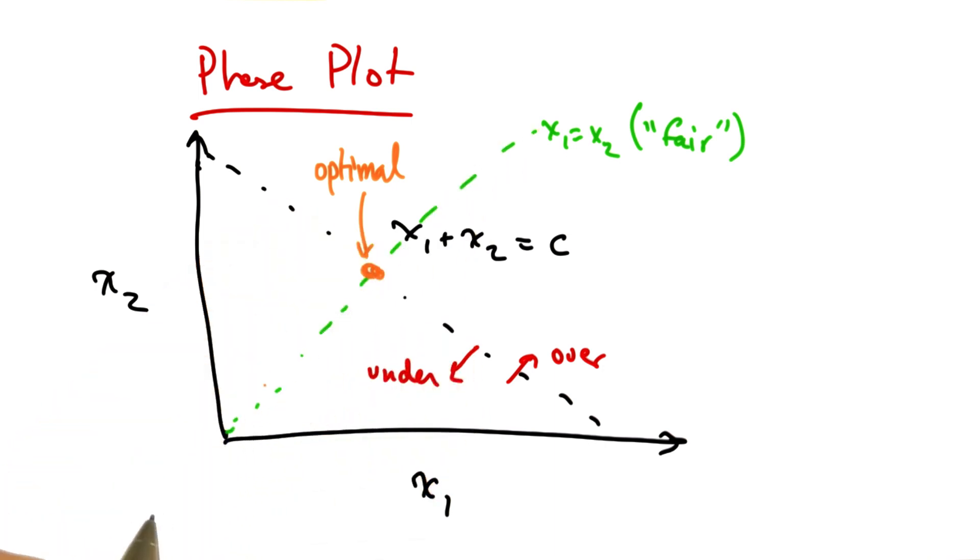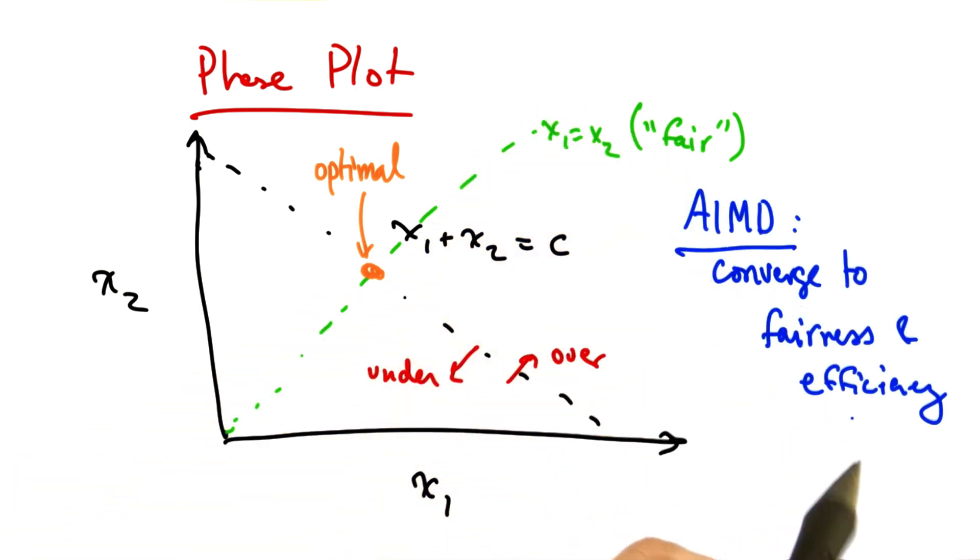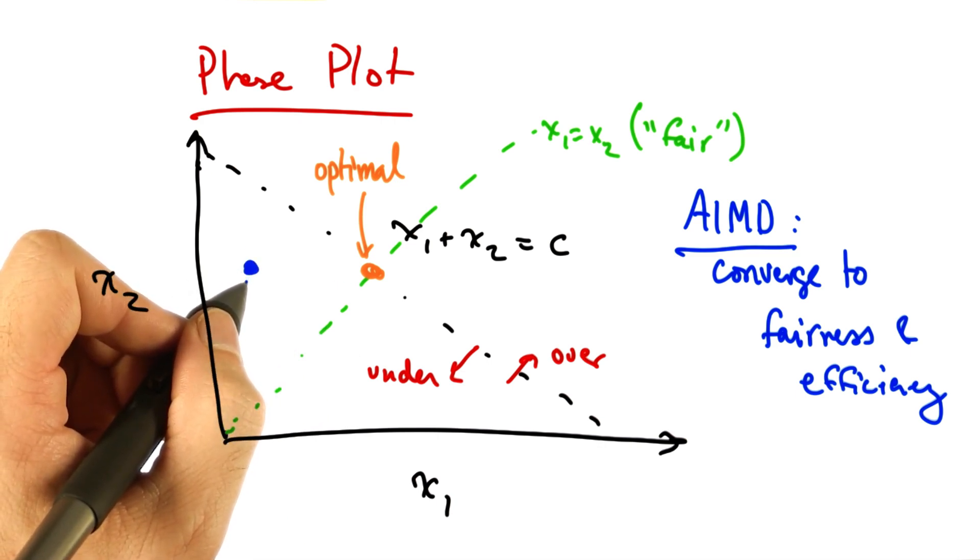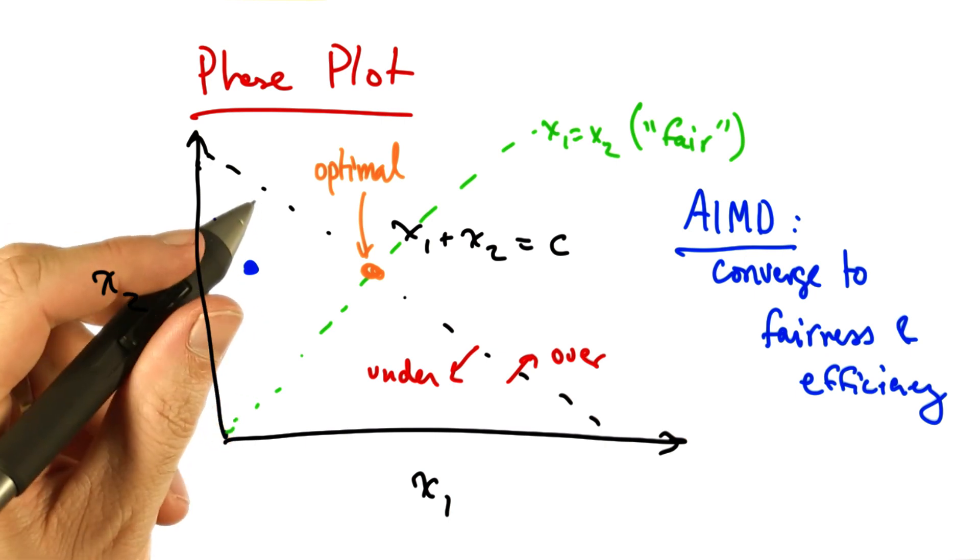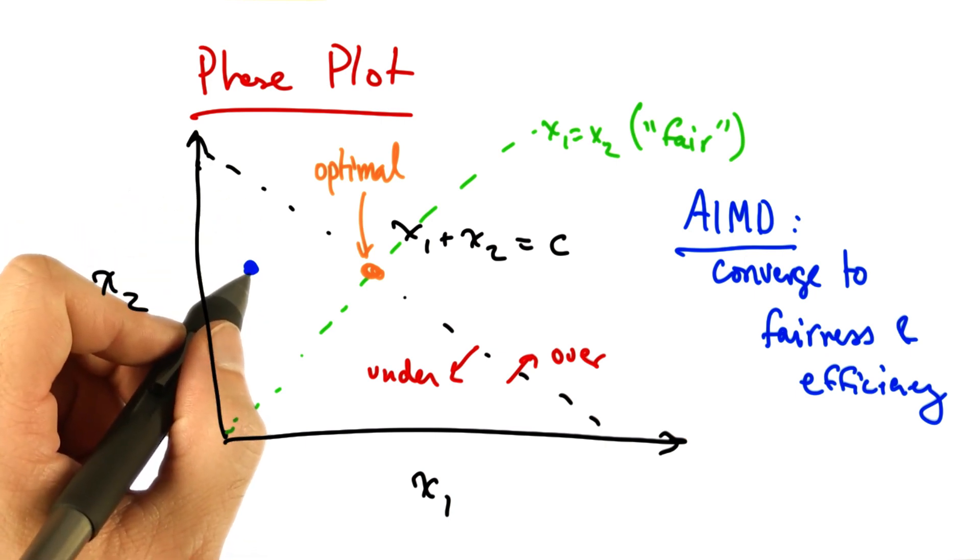We can use the phase plot to understand why senders who use additive increase, multiplicative decrease converge to fairness. The senders also converge to the efficient operating point. Let's suppose that we start at the operating point shown in blue. At this point, both senders will additively increase their sending rates.